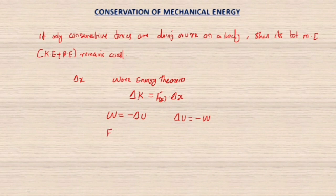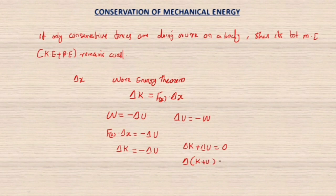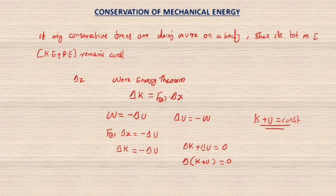So, work done equals ΔK = F Δx = −ΔU. Therefore ΔK = −ΔU, which means ΔK + ΔU = 0. The derivative of K + U equals zero, meaning K + U is a constant.